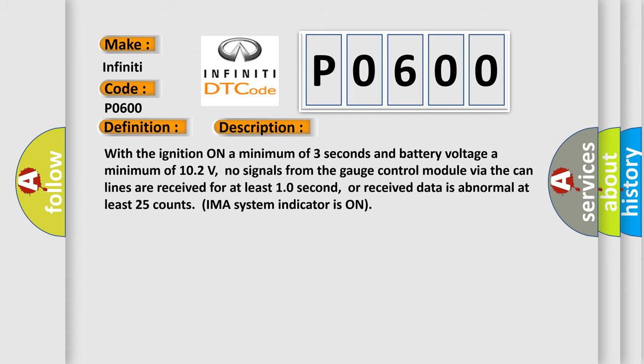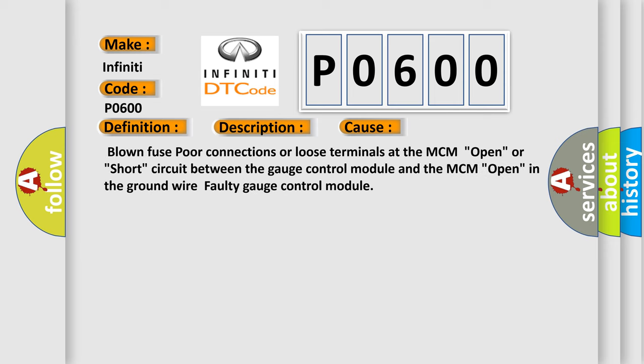And now this is a short description of this DTC code. With the ignition on a minimum of 3 seconds and battery voltage a minimum of 10.2 volts, no signals from the gauge control module via the CAN lines are received for at least 10 seconds, or received data is abnormal at least 25 counts. TIMER system indicator is on. This diagnostic error occurs most often in these cases: Blown fuse, poor connections or loose terminals at the MCM open, or short circuit between the gauge control module and the MCM open in the ground wire, faulty gauge control module.